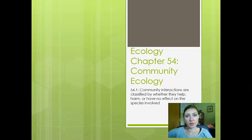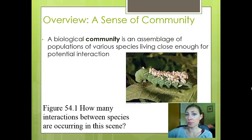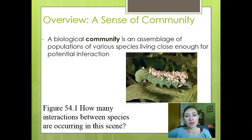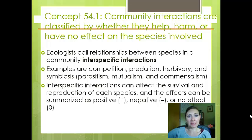Community ecology deals with different species living in the same geographic area. Our definition of community is an assemblage of populations of various species living close enough for potential interaction. These can be positive, negative, or neutral interactions. On this caterpillar we can see a number of different interactions happening between the parasitic wasp larvae and the caterpillar, as well as between the caterpillar and the plant.